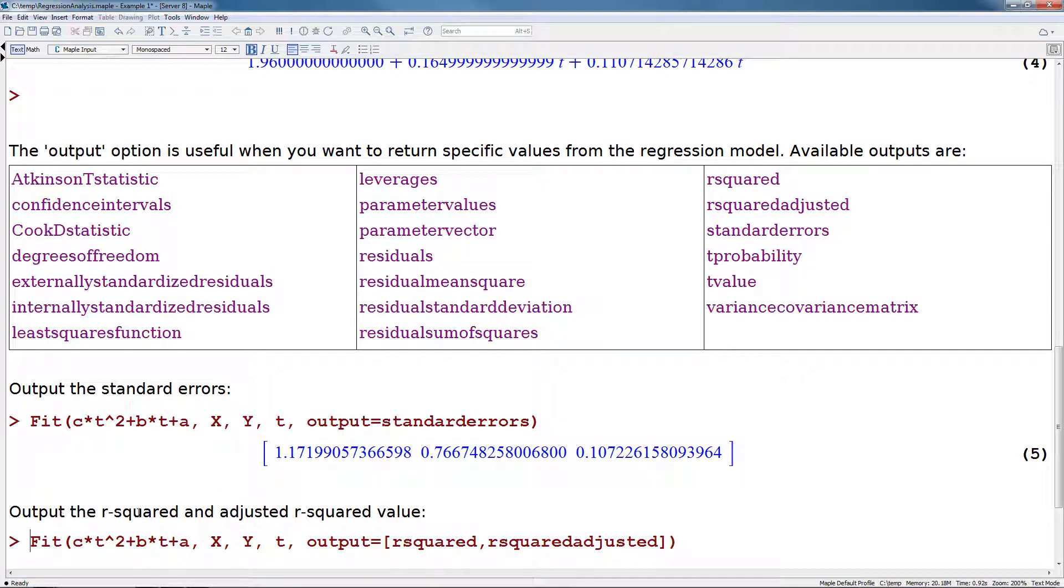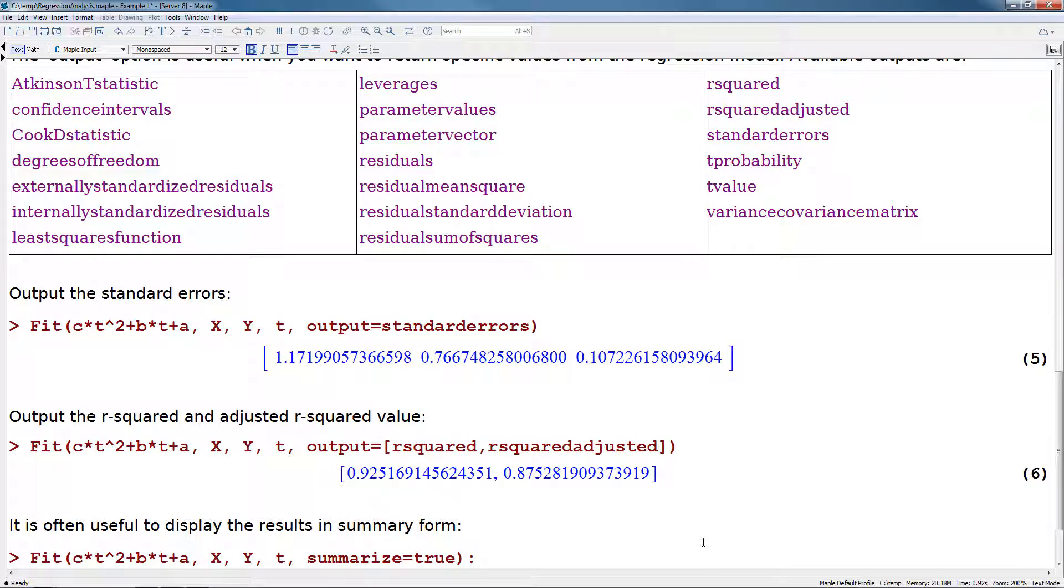We can also output the r squared or adjusted r squared values by giving the output as a list. So here we say output equals r squared comma r squared adjusted, and there are the resulting values.